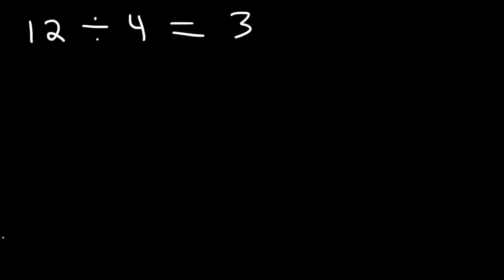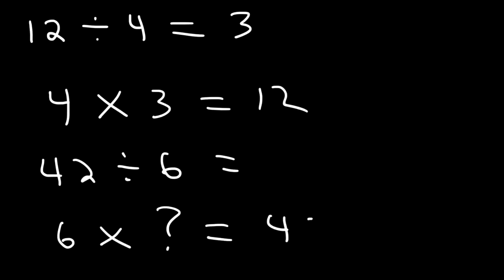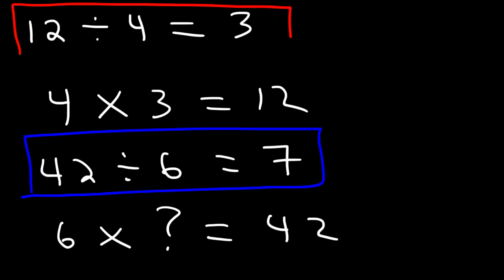Division is the reverse of multiplication. 4 times 3 is 12. So let's say if you want to divide 42 by 6 — ask yourself, 6 times what number is 42? If you know your multiplication tables, you know that 6 times 7 is 42. So 42 divided by 6 is 7. That's the basic idea behind division: it's the opposite of multiplication.